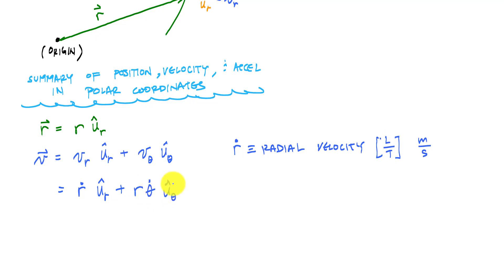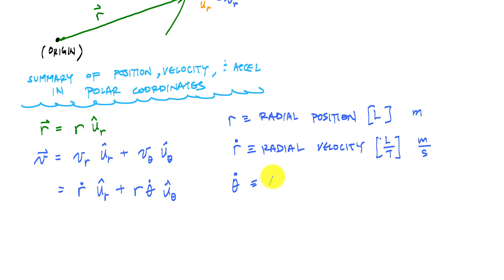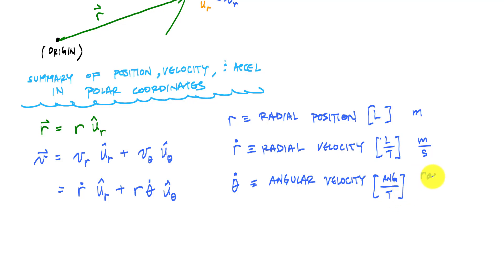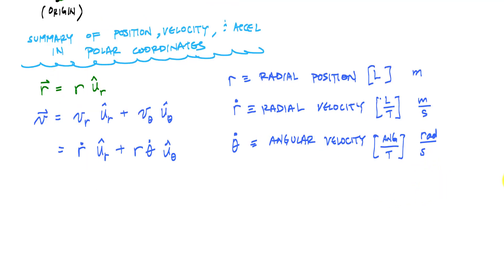In this case, r is the radial position with units of length, such as meters. Theta-dot is angular velocity — the change in angular position with respect to time — with units of angle over time. We typically use radians per second.